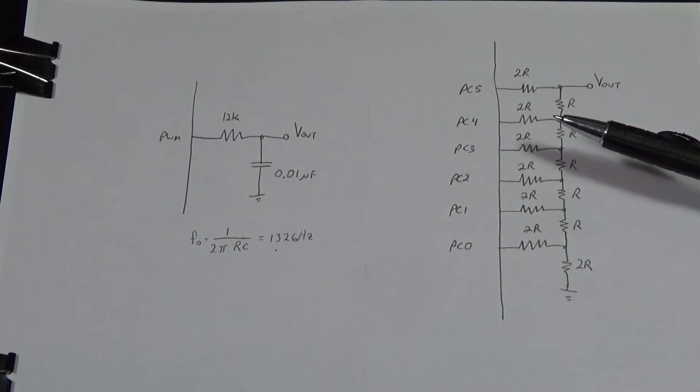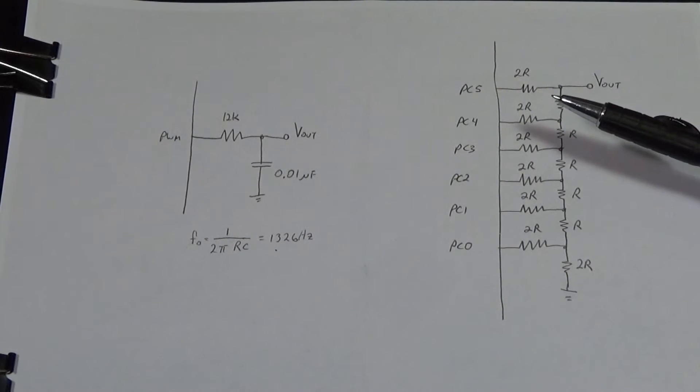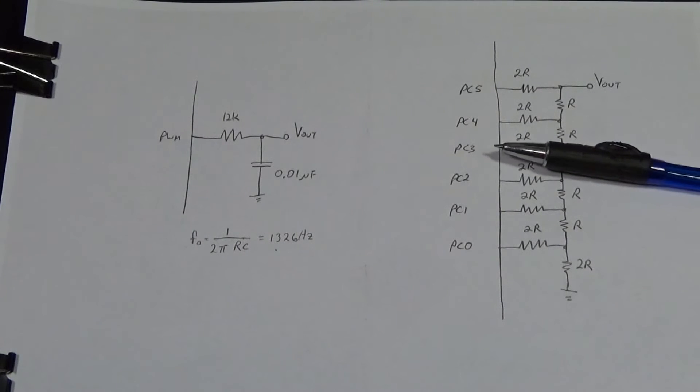So it doesn't change the maximum voltage that you'll produce but it does change the number of steps that you can create here and I've reduced the number of steps by a factor of four because I've knocked off two bits. So I will go back to the oscilloscope and have a look at what the output here looks like.